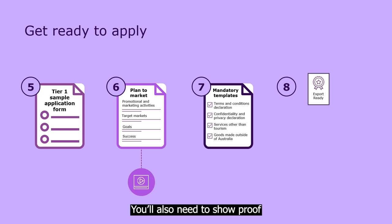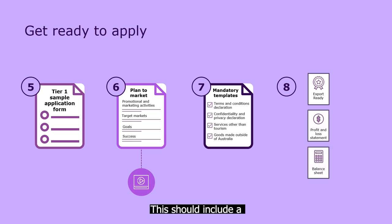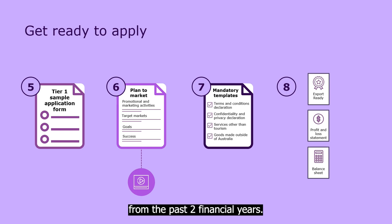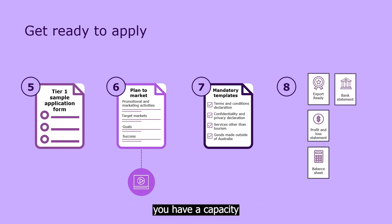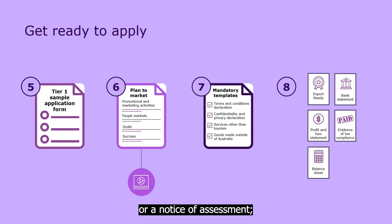You'll also need to show proof that you've been in business for two years and that your annual turnover is over $100,000. This should include a profit and loss statement and balance sheet from the past two financial years. You'll also need to provide current bank statements that show you have a capacity to spend at least $20,000 of your own money each financial year of the grant. Evidence of your tax compliance, for example documents like a business activity statement or a notice of assessment.